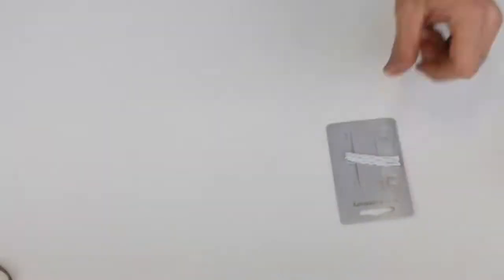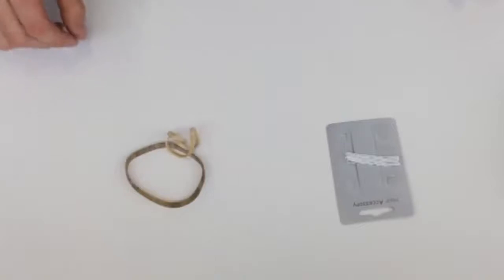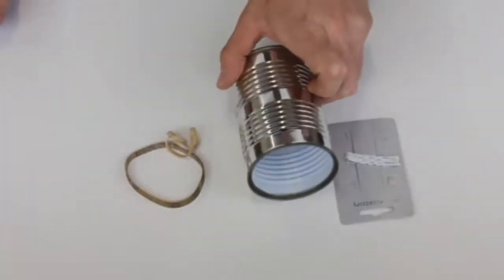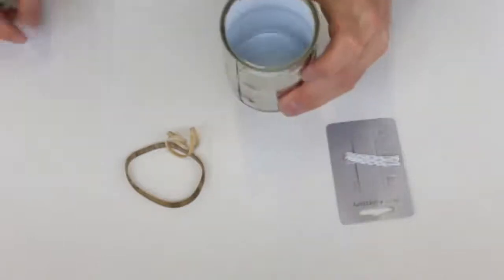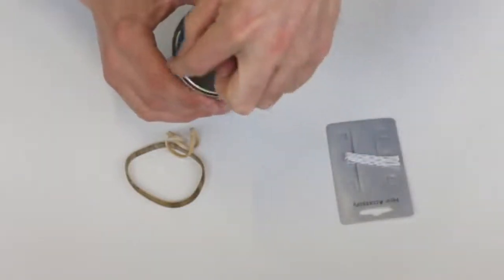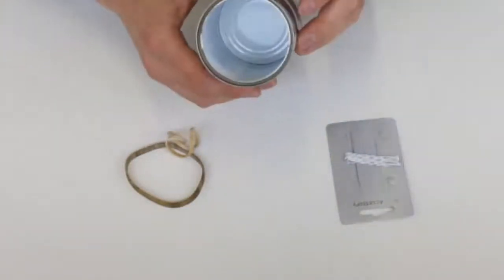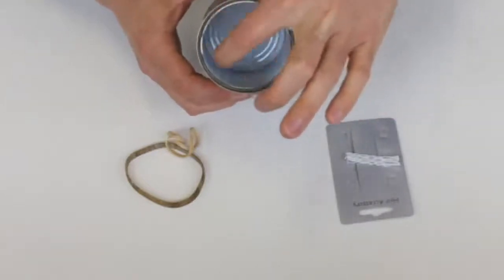For the tin can thumb piano you're going to need the following materials: hair clips, two rubber bands, and a cleaned easy-open food tin. You don't want the one that's been opened manually with a tin opener, and just be careful that edge there can be quite sharp.